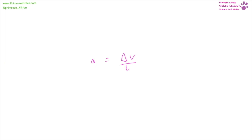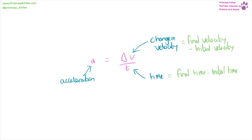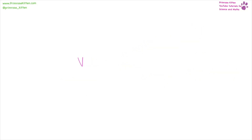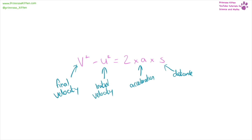Acceleration is equal to the change in velocity over time. We can work out the change in velocity by taking the final velocity and subtracting the initial velocity, and the time by taking the final time and subtracting the initial time. Acceleration is in meters per second squared. Velocity is in meters per second and time is in seconds. Final velocity squared minus initial velocity squared is equal to two times acceleration times distance. Velocity is in meters per second, acceleration in meters per second squared, and distance in meters.